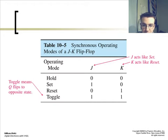With your hold, reset, set and toggle. Toggle is when J is 1 and K is 1 as well. Toggle means the Q flips to the opposite state.